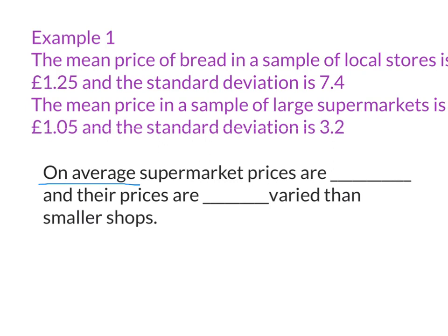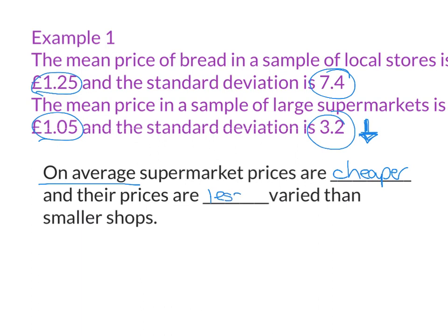The supermarket prices are £1.50 compared to £1.25, so think of a word to put in there. It could be 'on average supermarket prices are lower,' it could be 'cheaper,' it could be 'less.' I'm going to go for 'cheaper.' £1.50 is cheaper than £1.25, and their prices are... Now this is talking about the variation of the numbers. We're looking at our standard deviation now. Our standard deviation for supermarkets is lower. Remember — the lower it is, the closer together the prices are. So the prices are less varied than smaller shops.